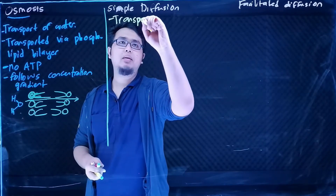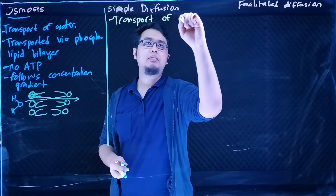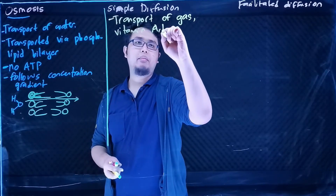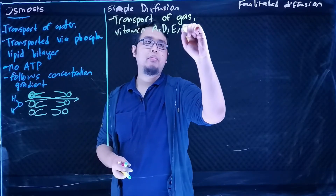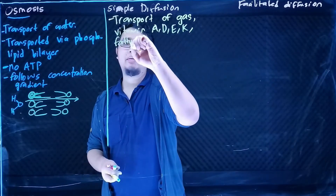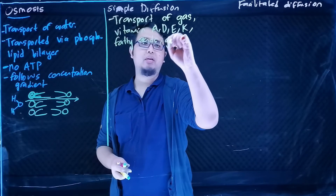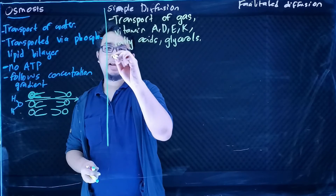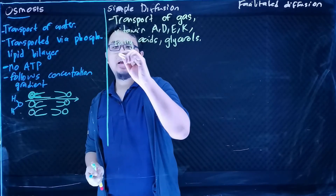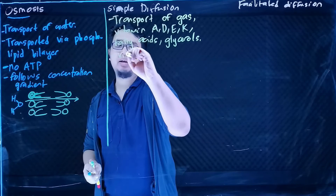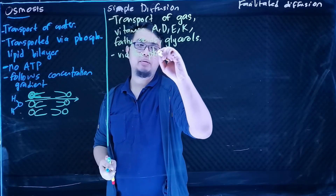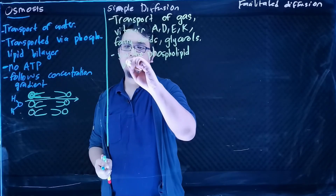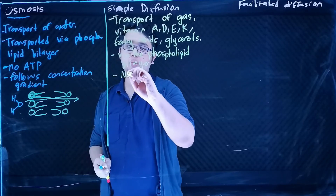Simple diffusion includes the transport of gases, vitamins, fatty acids, and glycerol. Similar to osmosis, these substances are transported via the phospholipid bilayer and require no ATP.